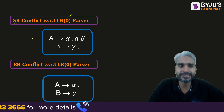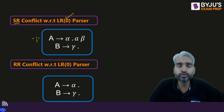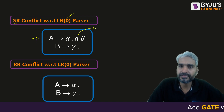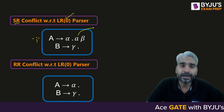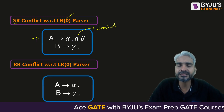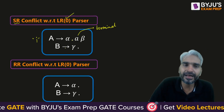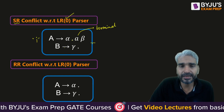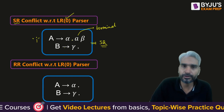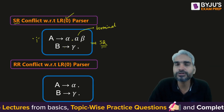With respect to LR0, SR conflict exists if in state i of the DFA of LR0 items two such items exist: there is a shift at terminal a — meaning there is a terminal immediately to the right of the dot mark — and there is also a reduce production. Then we can directly say that SR conflict exists in the LR0 parser.